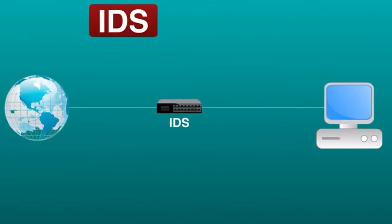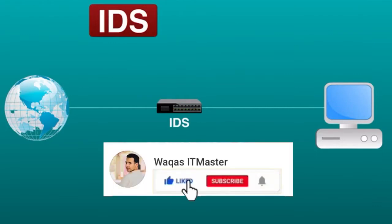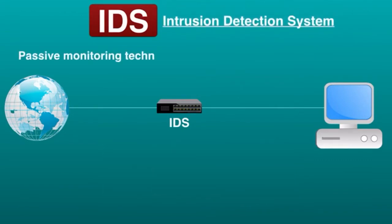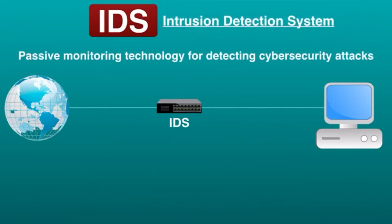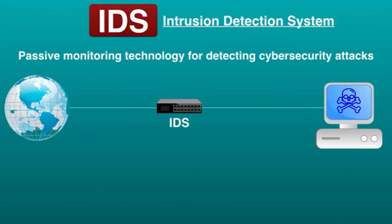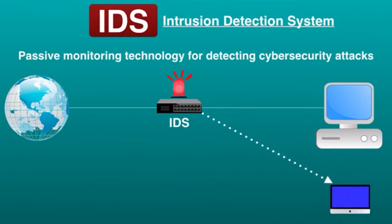Today we are going to see the difference between IDS and IPS — both are important parts of network security. IDS, or Intrusion Detection System, is a passive monitoring technology for detecting cybersecurity attacks on a company. IDS analyzes network traffic for possible dangerous activities such as malicious attacks and violations of security protocols. If a problem is detected, IDS creates an alert that notifies the administrator to investigate the incident and take appropriate action.